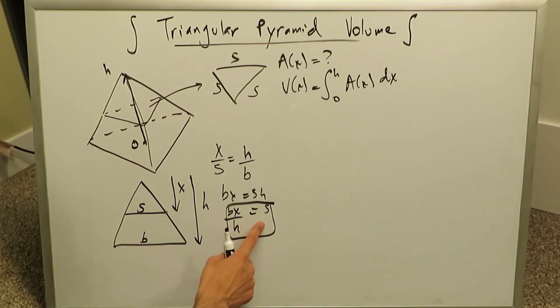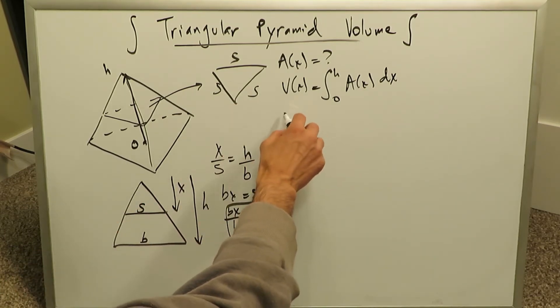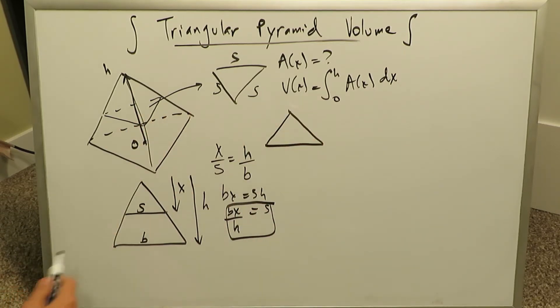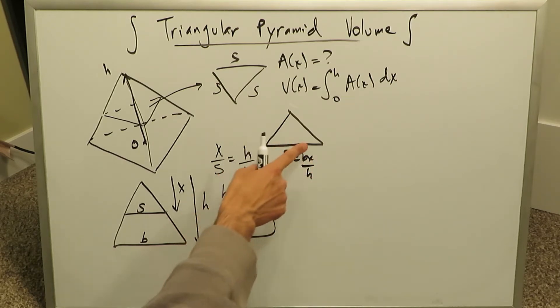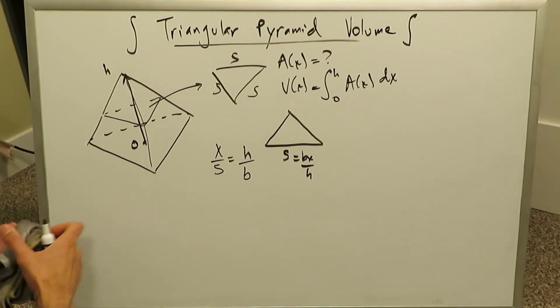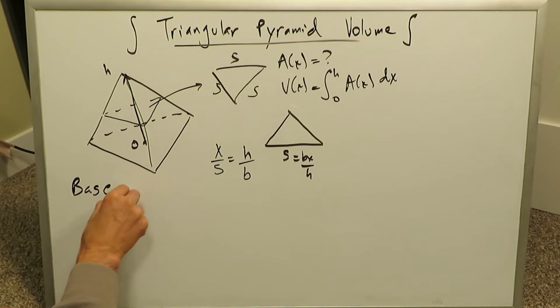Anyhow, we've determined the side is equal to BX over H. If you look at again at this triangle, we're looking here at a cross-sectional slice. I'm just looking at it now dead on or flat, and this S over here is equal to BX over H, and this represents the base of this triangular slice. Let's bring that base right down here. We know that the base of the triangular slice is equal to BX over H.